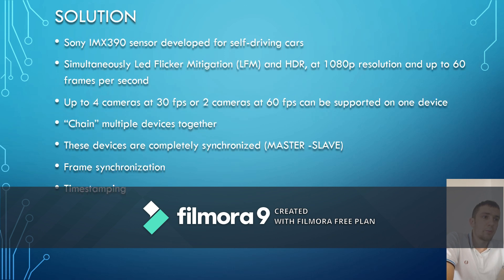Currently the video logger device supports cameras with the new Sony IMX390 sensor, which was developed for self-driving cars. This sensor is capable of providing concurrent LED flickering mitigation and HDR processing at full HD resolution and up to 60 frames per second. Up to four cameras at 30 frames per second or two cameras at 60 frames per second can be supported on one device. It is also possible to chain multiple devices together in order to support more than four cameras. These devices are completely synchronized — one of them is master, which controls the other slave devices. All cameras are synchronized with a common external pulse, and all captured data are timestamped with the central time received from GPS. The GPS device is connected to the master device.